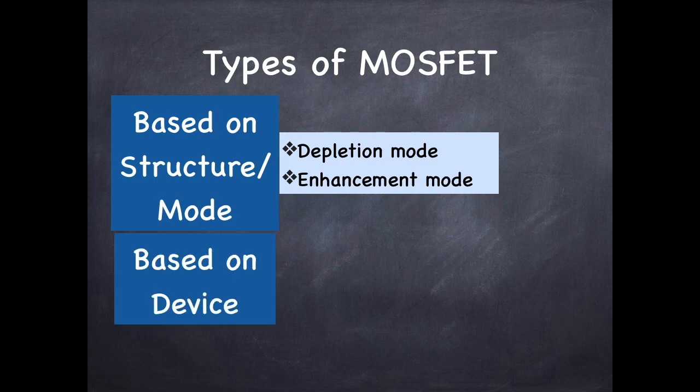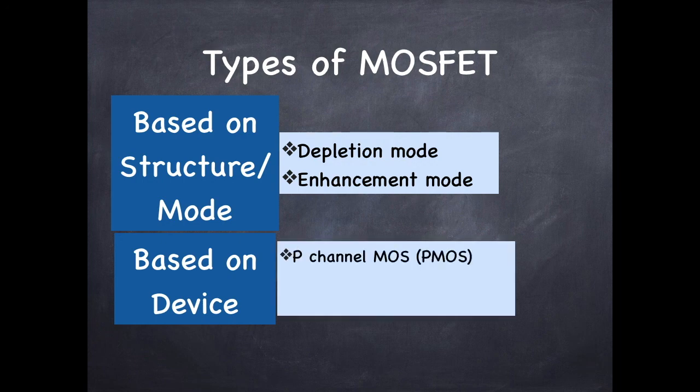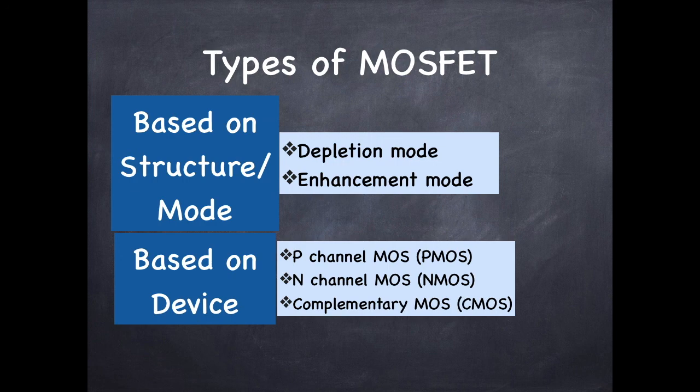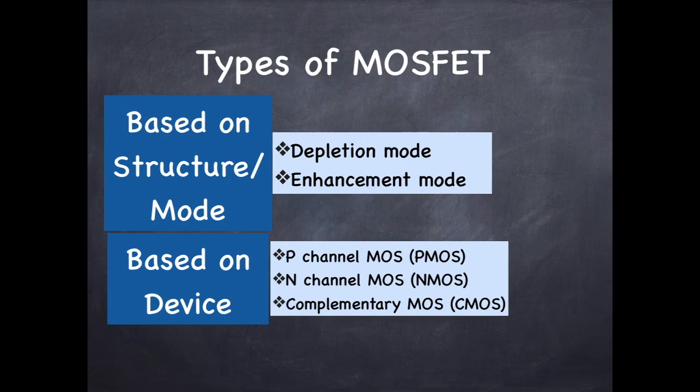based on the device or the channel which we use, they are classified as P channel MOSFET, N channel MOSFET and CMOS which is complementary MOS which is a combination of NMOS and PMOS.